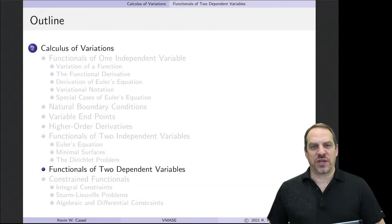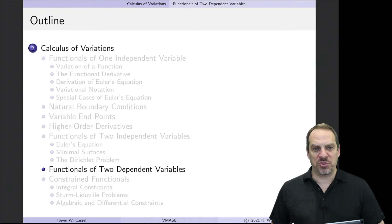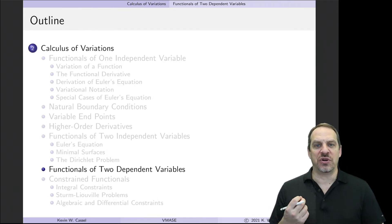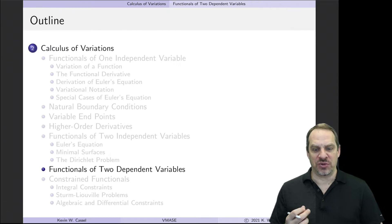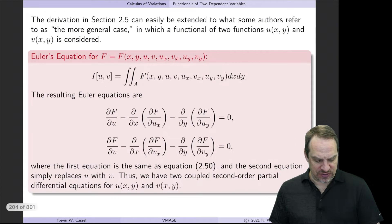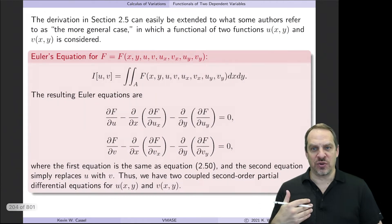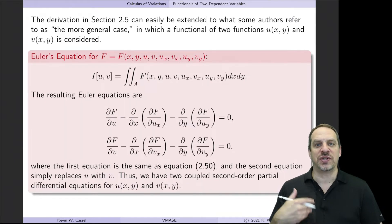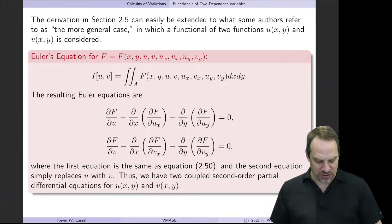In the last several videos, we've been looking at functionals involving two independent variables, so two-dimensional problems. Now we're going to look at functionals where we also have two dependent variables. It turns out that this case is very straightforward — we just get another Euler equation for the additional dependent variable, just like the original dependent variable.